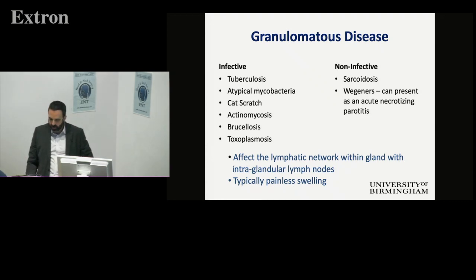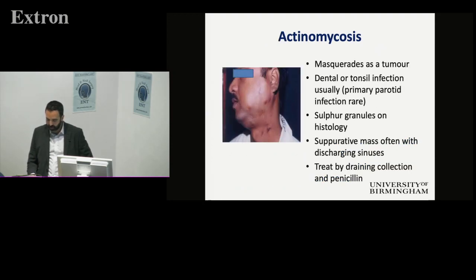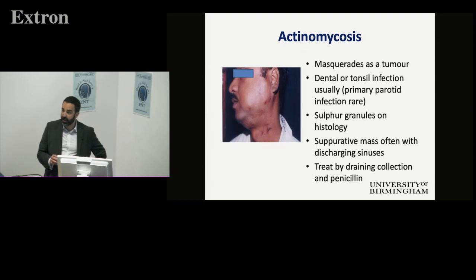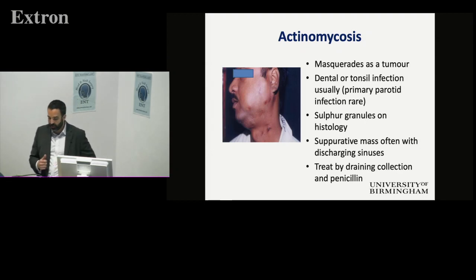Granulomatous diseases — there's a long list of these, and they affect lymphatic drainage within the gland, causing increased swelling due to primary granulomatous infection of usually the parotid gland. With actinomycosis — usually seen in tonsils — you can get ascending infection from the tonsils causing quite a significant suppurative infection of the parotid gland. This is one of the few cases where you might consider draining an abscess early. It's sensitive to penicillin and can be treated quite well. Surgery other than acute drainage for a big abscess isn't really necessary.